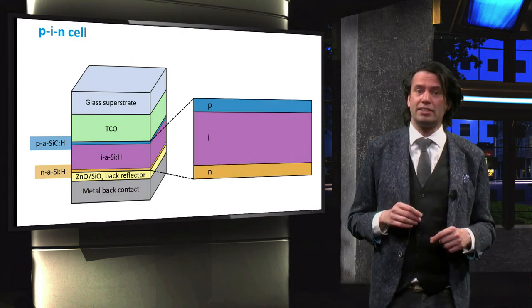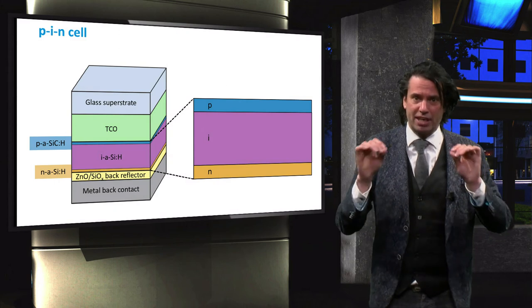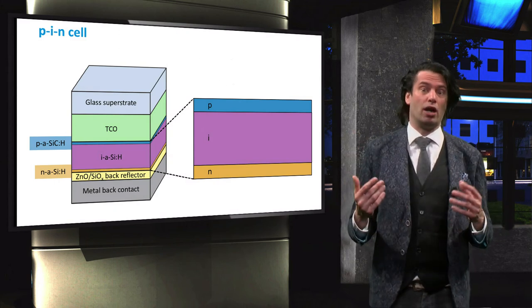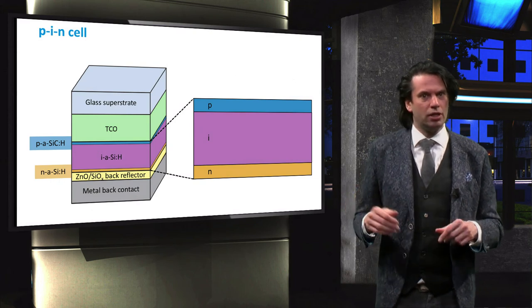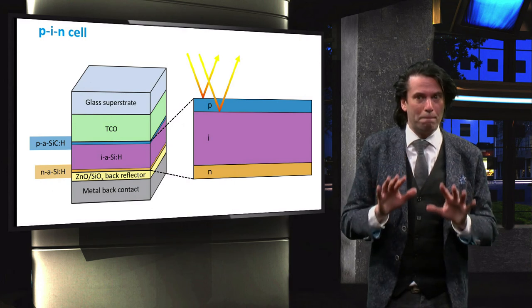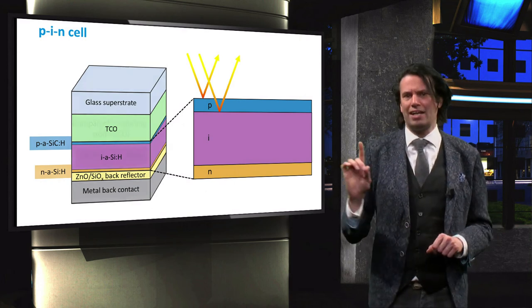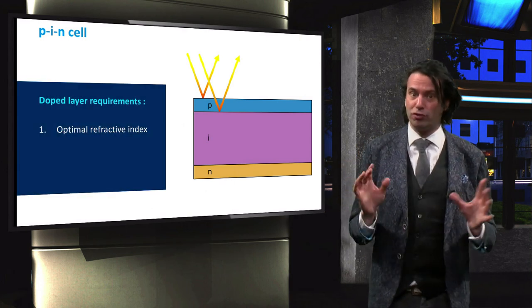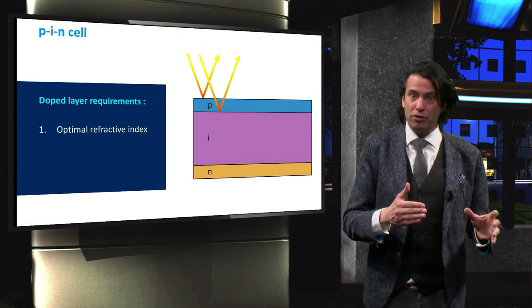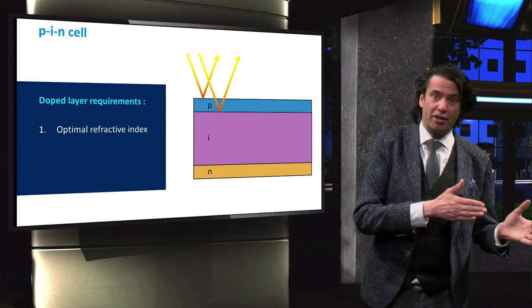Consequently, doped layers in a p-i-n cell have a very specific set of requirements. In order to maximize the amount of light reaching the absorber layer, the reflection at the interfaces of the window layer should be minimal. To that end, the refractive index of the p-doped layer should be equal to the geometric mean of that of the TCO layer and the i-layer.